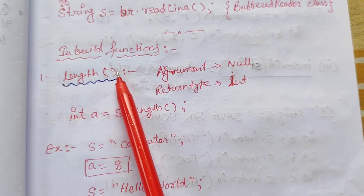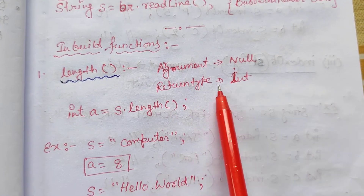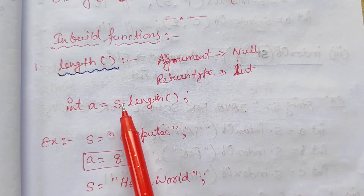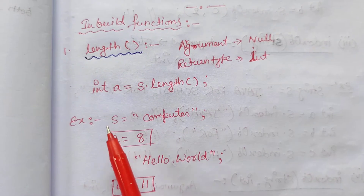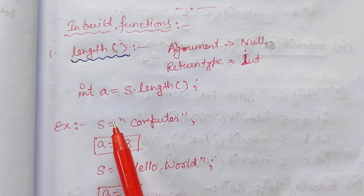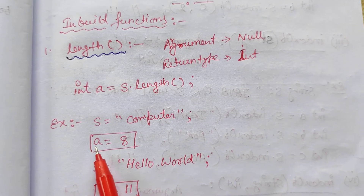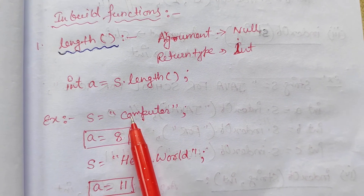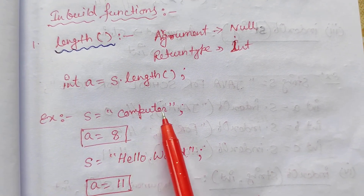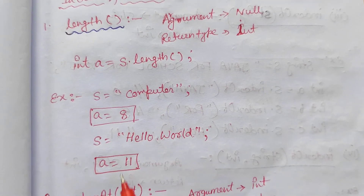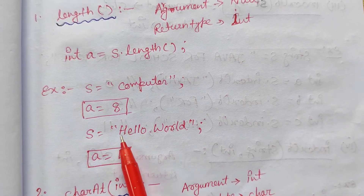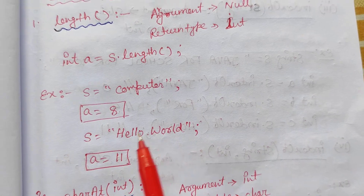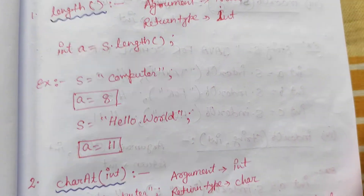The argument of length() will be null, and the return type will be integer. So we write: int a = s.length(). Suppose we have a string s = "computer". So a = s.length() will be 8, because there are 1-2-3-4-5-6-7-8 characters. Similarly, "hello world" will be 11 — 1-2-3-4-5, space is also a character, 6-7-8-9-10-11. Like that we can get the length of a string.